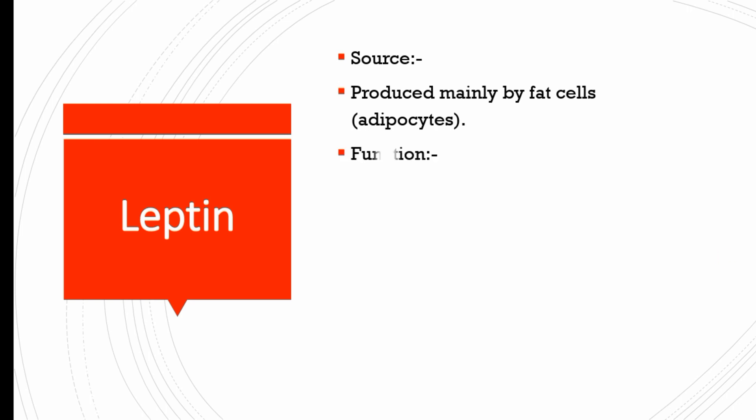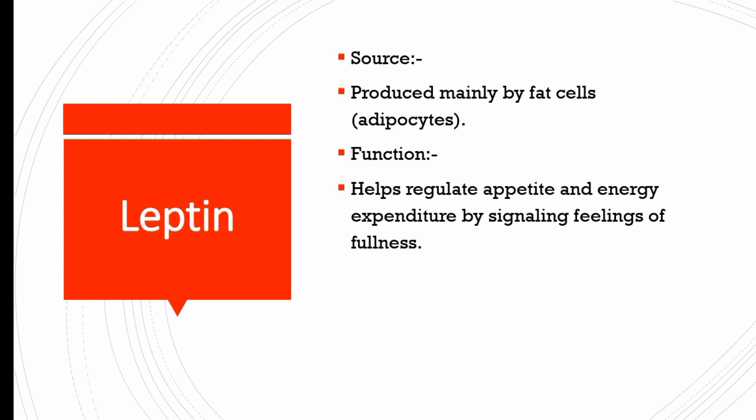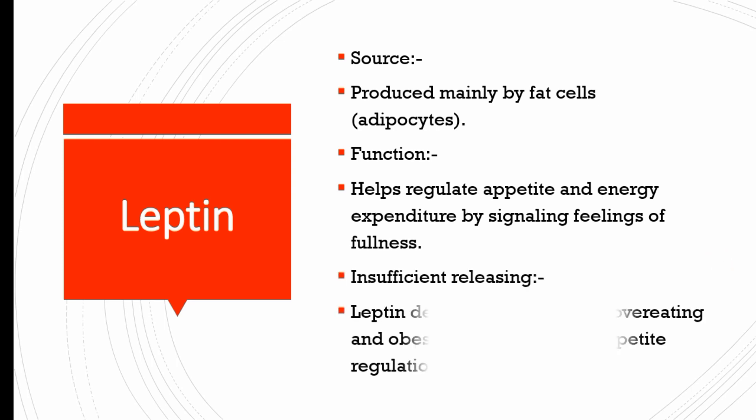Leptin is produced mainly by fat cells. Its function is to help regulate appetite and energy expenditure by signaling a feeling of fullness. Leptin deficiency may lead to overeating and obesity due to reduced appetite regulation.